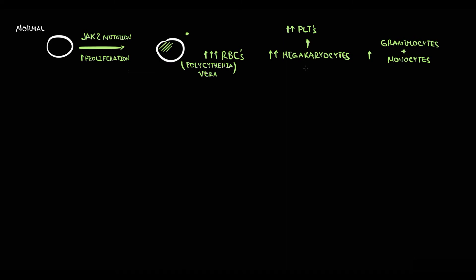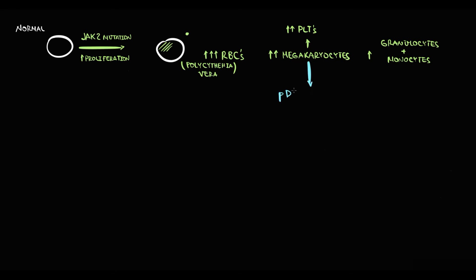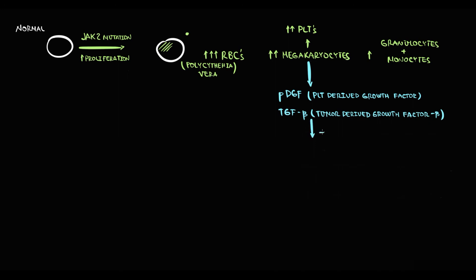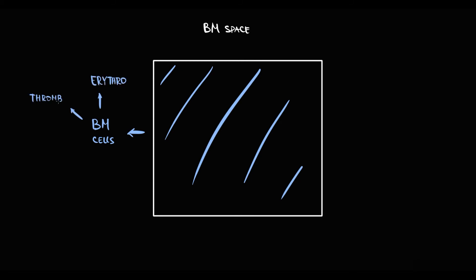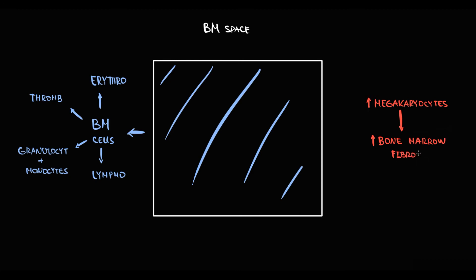The most important cells in polycythemia progression are megakaryocytes. The reason is that inside the bone marrow, megakaryocytes produce profibrogenic factors such as platelet-derived growth factor and transforming growth factor beta. These factors stimulate fibroblasts to produce connective tissue, such as collagen, inside the bone marrow. The problem is that bone marrow is already 100% fully packed with cells — erythroid cells, cells of the thrombocyte lineage, granulocytes with monocytes, and lymphoid cells. We call this process bone marrow fibrogenesis.